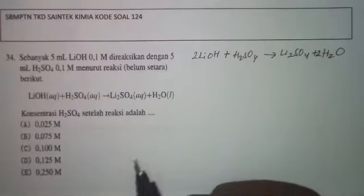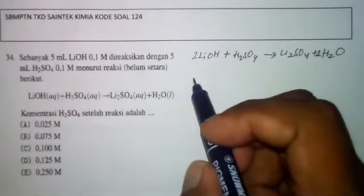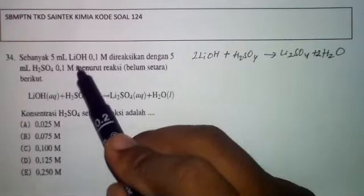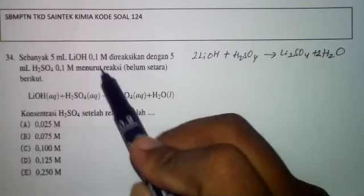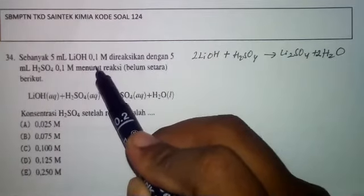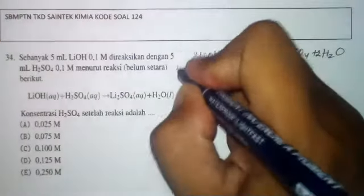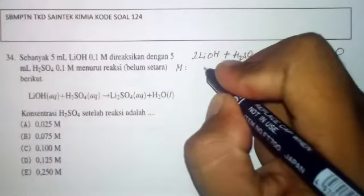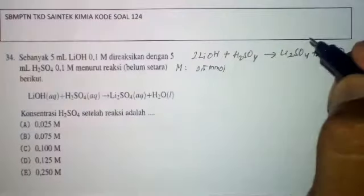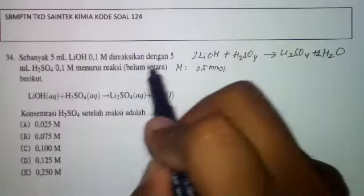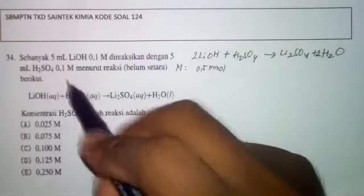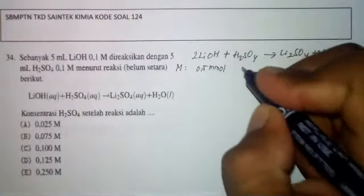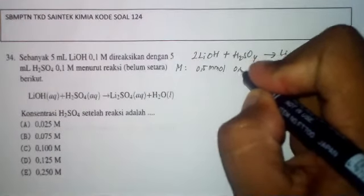Langkah selanjutnya adalah kita cari mol zat-zat yang bereaksi dengan cara mengalikan volume dengan molarnya. Untuk LiOH ada 5 mL dengan konsentrasi 0,1 molar, sehingga molnya adalah 0,1 × 5 = 0,5 milimol. Sedangkan H2SO4 juga sama, 5 mL × 0,1 molar, hasilnya adalah 0,5 milimol.